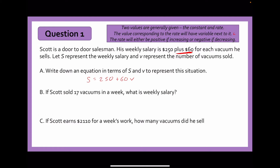Question B reads: if Scott sold 17 vacuums in a week, what is his weekly salary? So we're going to substitute V equals 17 to find the value of S. Substituting 17 into the equation: S equals 250 plus 60 multiplied by 17. Putting that into the calculator you get S equals $1,270. Because this is a word problem, make sure you include appropriate units — so he earns $1,270 in a week.